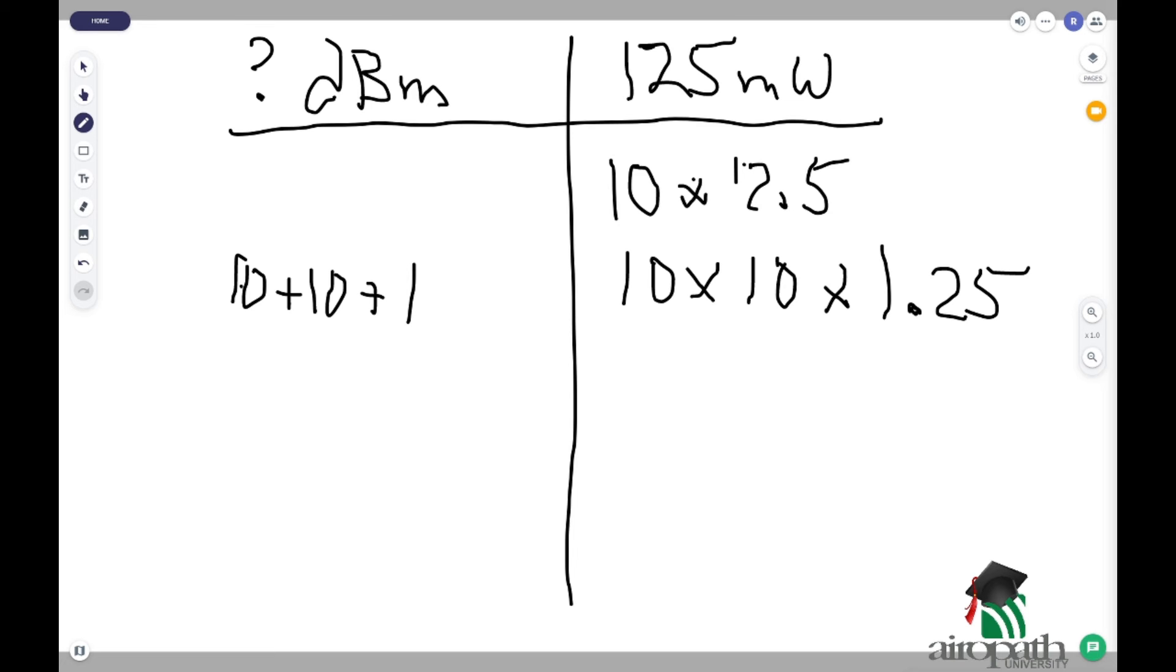So, we have 10 plus 10 plus 1, which is 21 dBm is equal to 125 milliwatts.